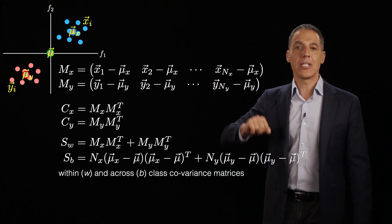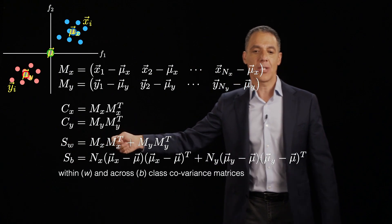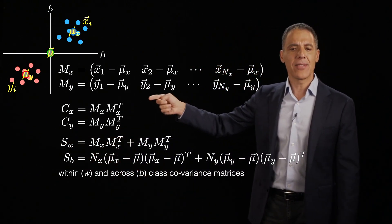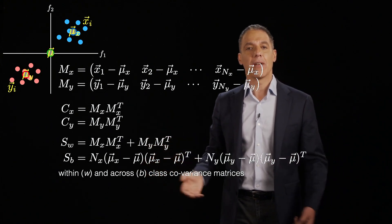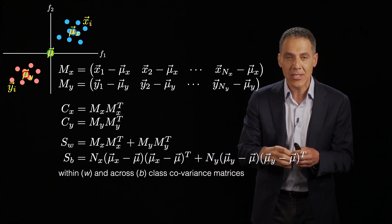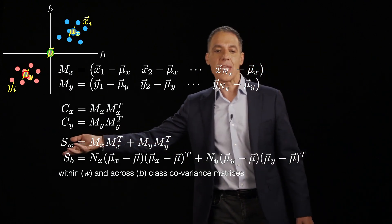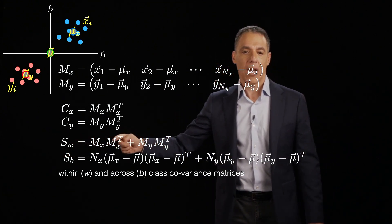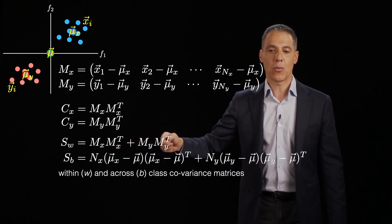Now, two more matrices and we're almost home. I'm going to define the within class variance and the between class variance. So remember I said that Cx and Cy were the covariance matrices. And remember that the whole objective of linear discriminant analysis is to minimize the within class and maximize the across class. So I'm going to define the within class matrix SW as simply the covariance matrix for the x class plus the covariance matrix for the y class.